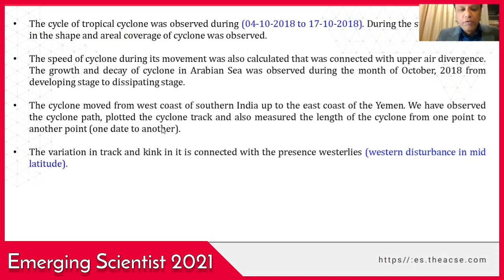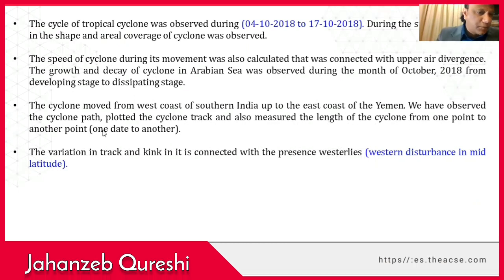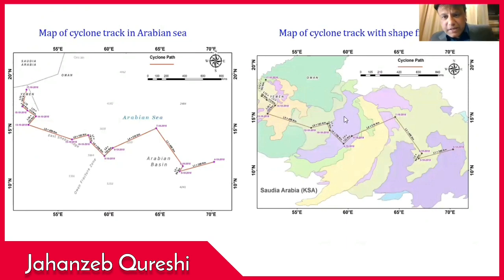The growth and decay of the cyclone in the Arabian Sea was observed during October 2018 from developing to dissipating stage. The cyclone moved from the west coast of southern India up to the east coast of Yemen. We observed the cyclone path, plotted the cyclone track, and measured the length of the cyclone from one point to another, one date to another. The variation in the track and kink is connected with the presence of upper air troughs. This is the map of the cyclone track in the Arabian Sea, showing the cyclone moving from one date to another, and the map of the cyclone track with the shape file.